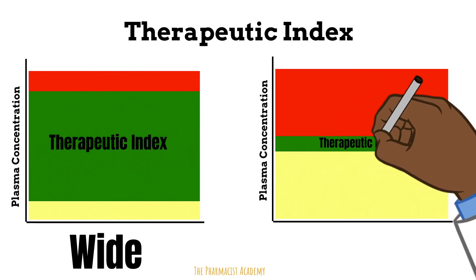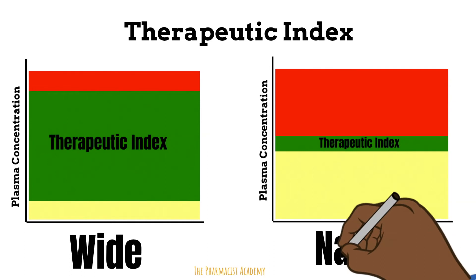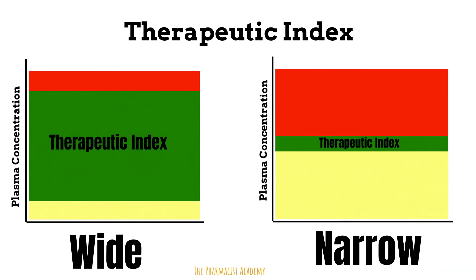And then you have the narrow therapeutic index. As you can see, it's a very small gap and the yellow and red zones are pretty close. This is why you want to be very careful with these medications — you want to dose them appropriately to make sure they don't move into either zone. This is also why we monitor these drugs.